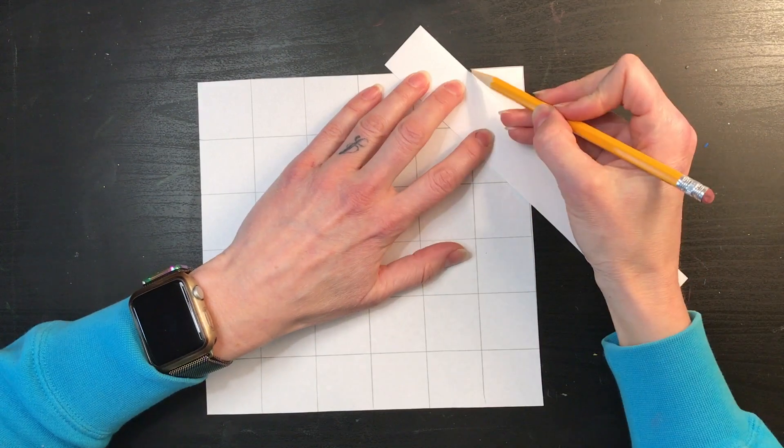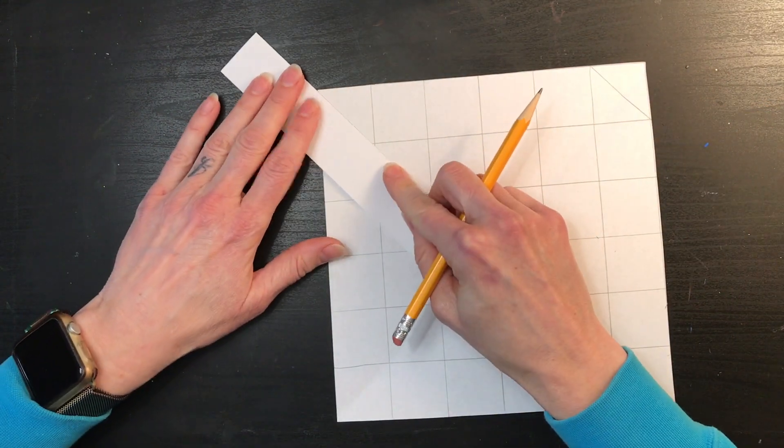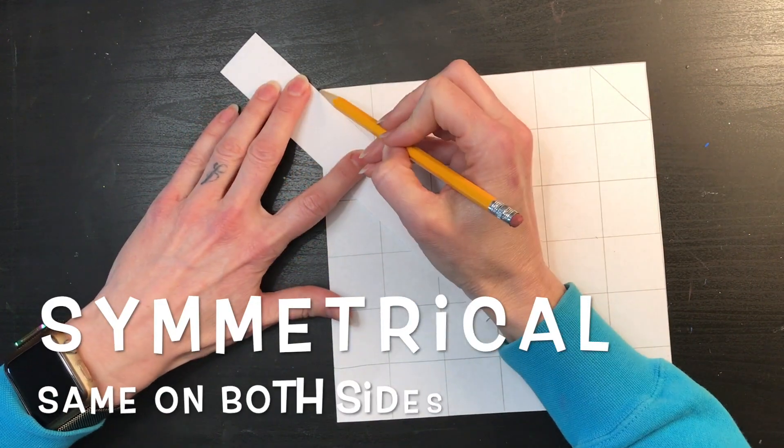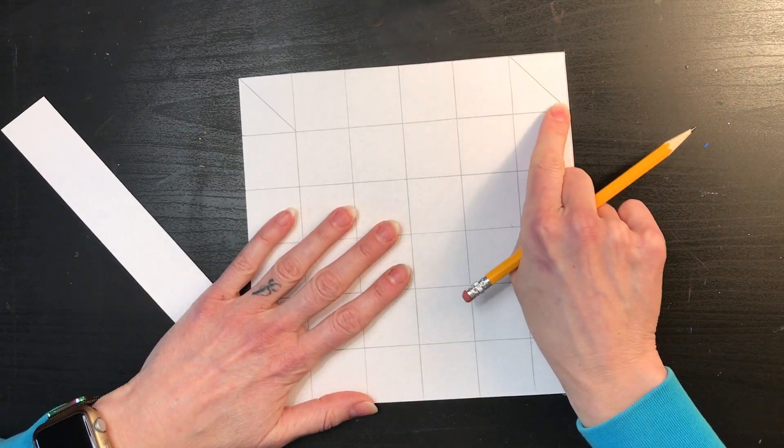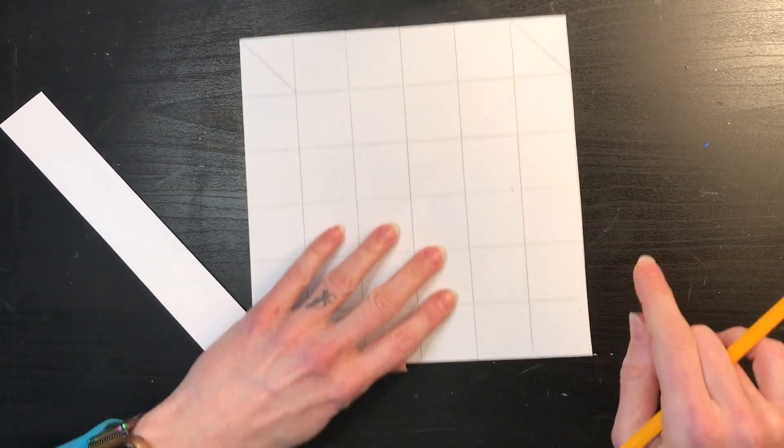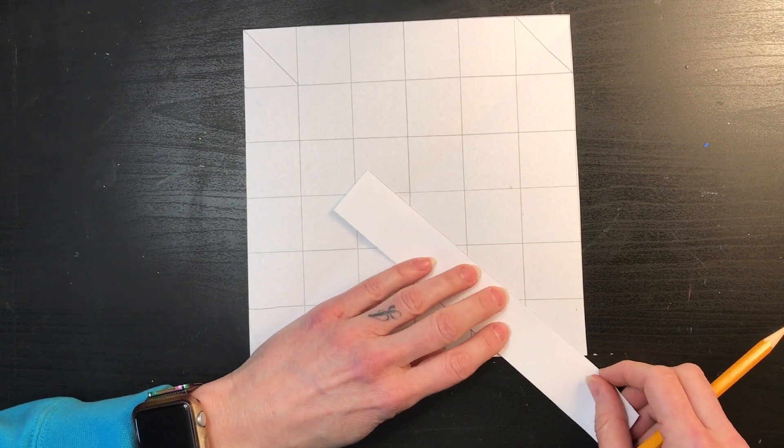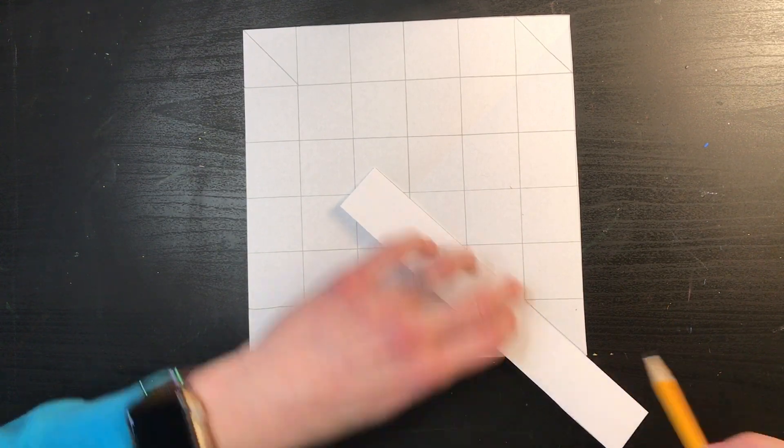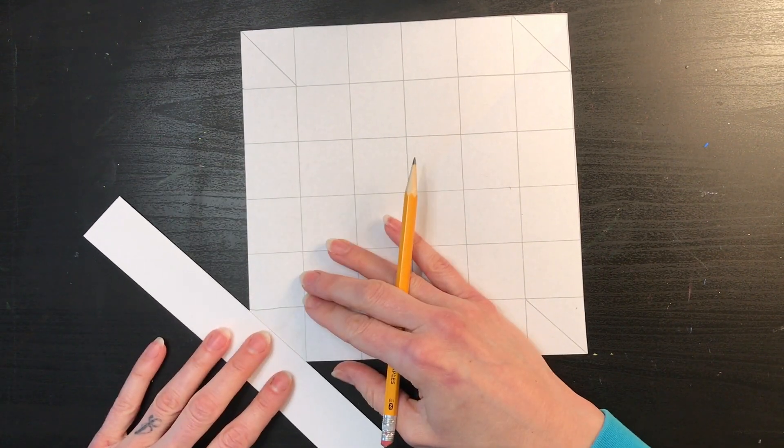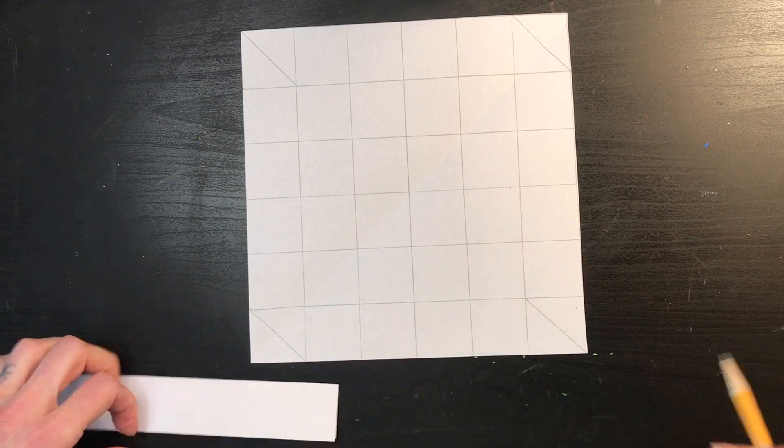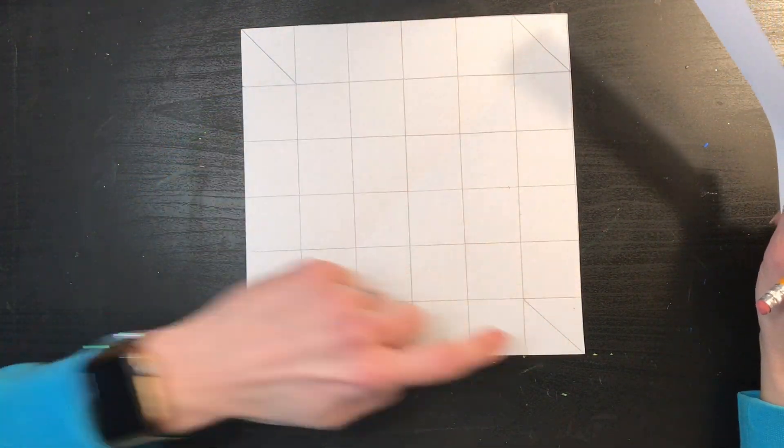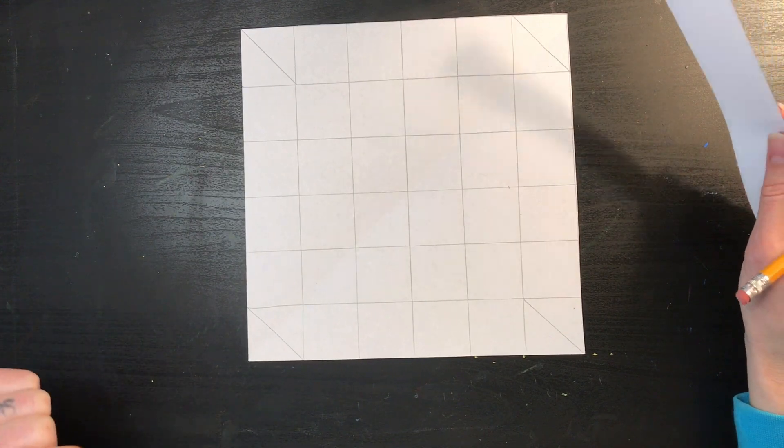Now, one thing about the Islamic tiles is that they are symmetrical. That means whatever you do on the right side of your paper, you should do the same thing on the left side. All right. So far, I've made myself two little triangles, two little triangles, two little triangles, and two little triangles. Excellent.